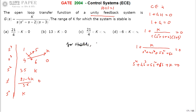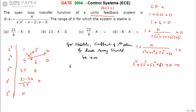For stability, all coefficients of the first column of the Routh array must be positive. The S⁴ coefficient is 1 — positive. The S³ coefficient is 4 — positive. The S² coefficient is 3.5 — positive.